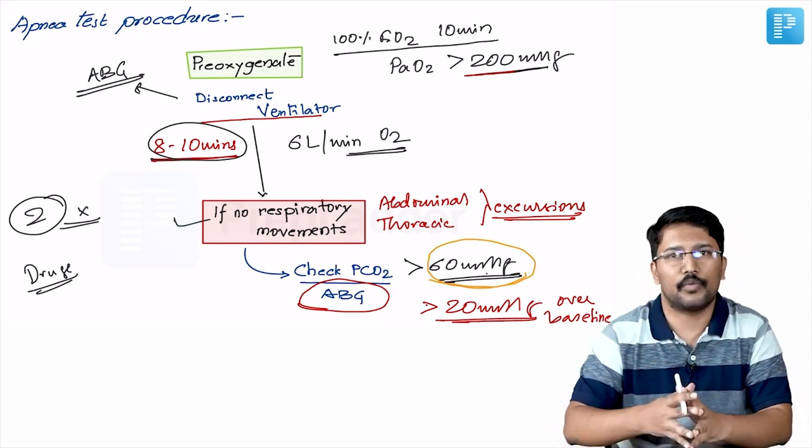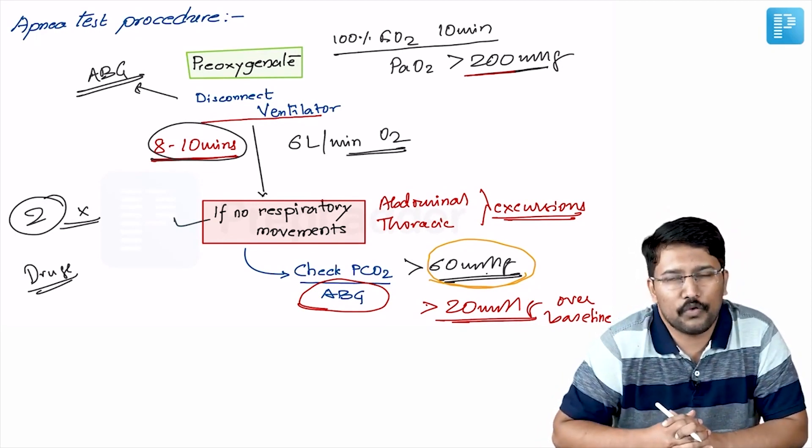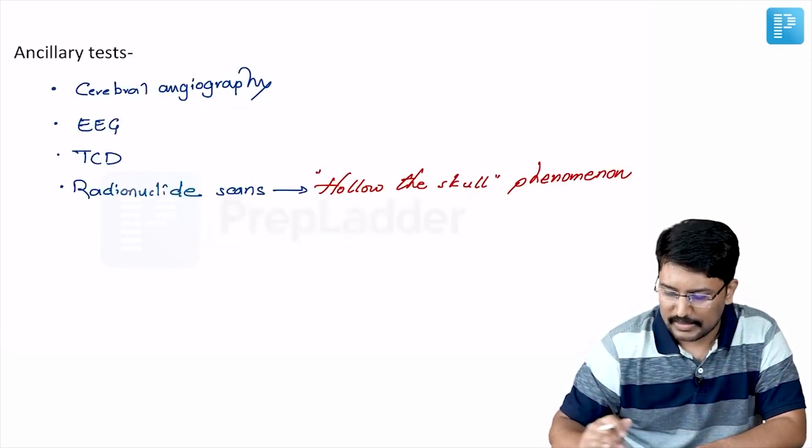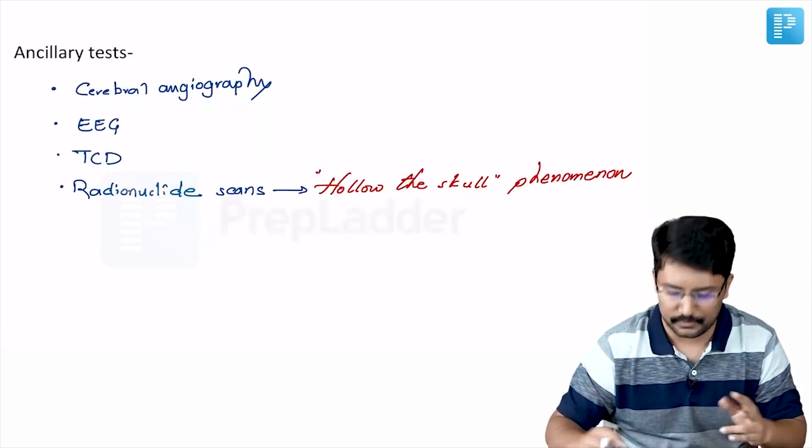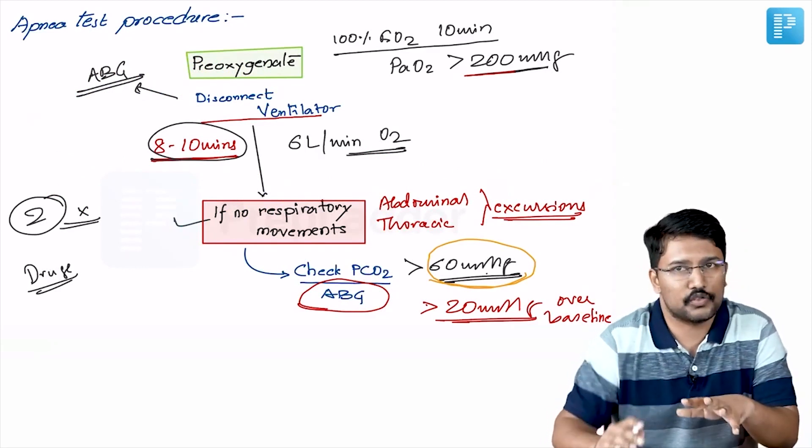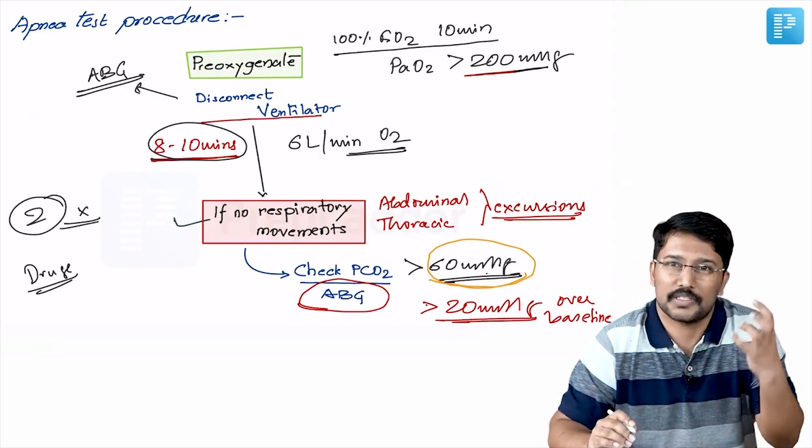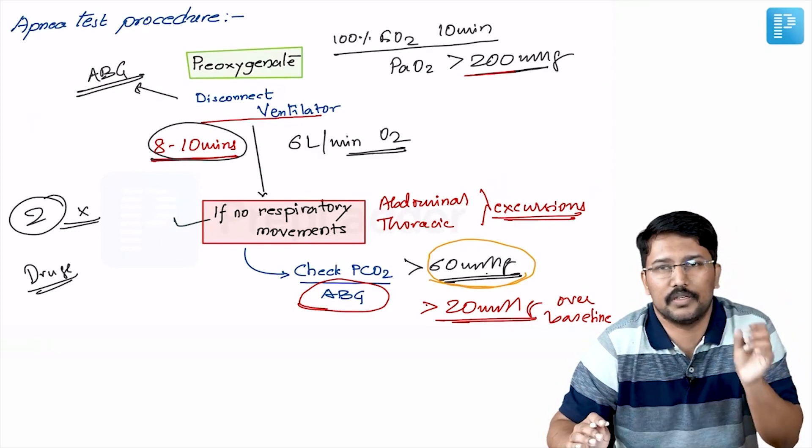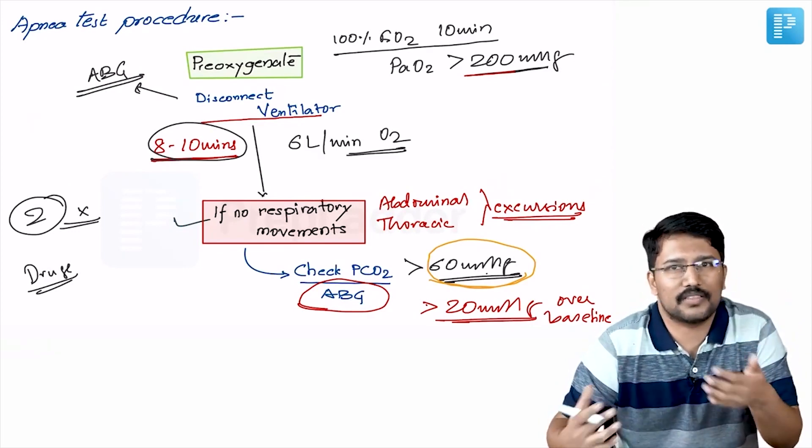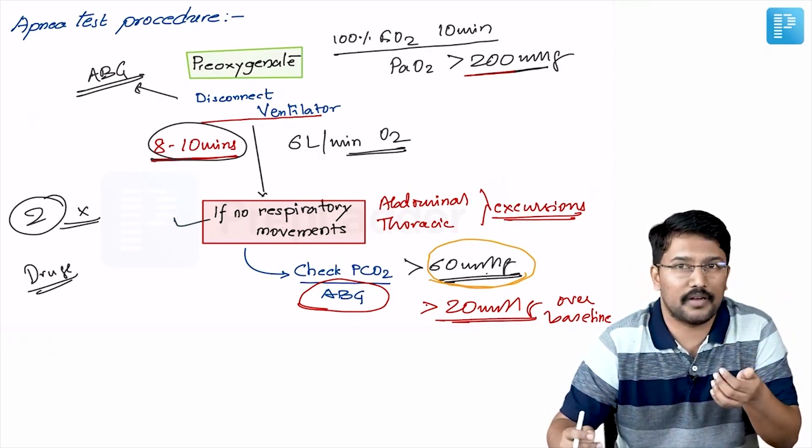So that was simple about brainstem death. Now, before we wind up, let us take some MCQs and see if we have understood the topic well. This was the essence of diagnosis of brainstem death. Are there any tests which confirms these clinical observations? Well, there are supportive tests or ancillary tests, but there is no confirmatory test.